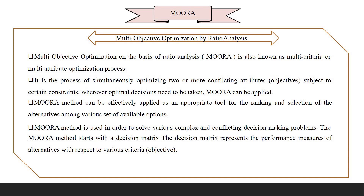MOORA is used for selection of refrigerants for domestic refrigerators and also for selection among alternatives. It is used to solve various complex problems and decision making problems, and it contains a decision matrix that represents the performance measure of alternatives with respect to various objectives and attributes.